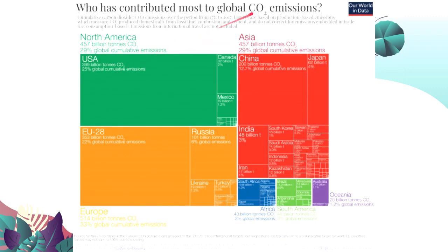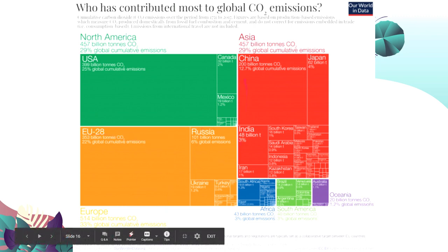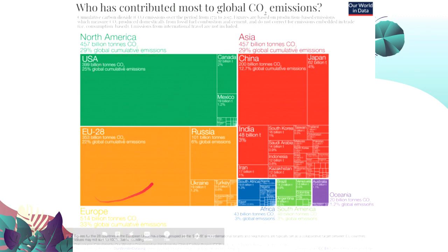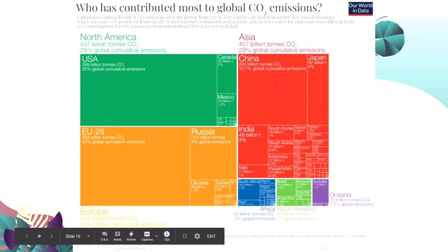Looking at who has contributed most to global carbon dioxide emissions: for North America it's the United States; then the European Union; then Russia. For Asia it's mostly China and Japan. The Philippines is so small it can barely be seen. The major regions contributing to global CO2 emissions are the US, European Union, China, Japan, India, and Russia.